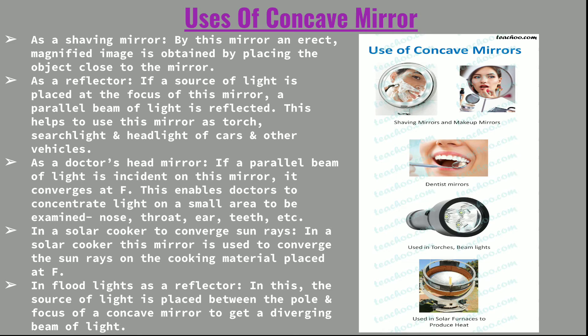The concave mirror is also used in a solar cooker to converge sun rays. The parallel rays from the sun are incident on the mirror, which converges them at F, where the cooking material is placed. This concentrates heat at F and makes cooking faster. In floodlights, the source of light is placed between the pole and the focus of the concave mirror to get a diverging beam of light.